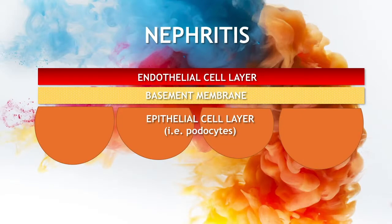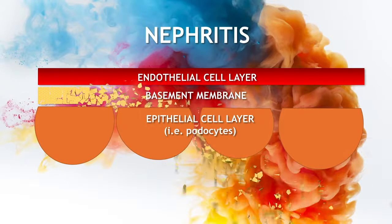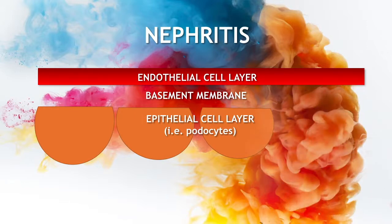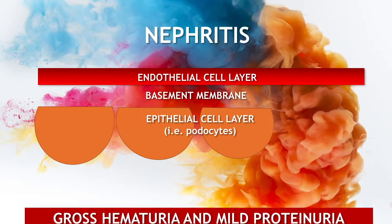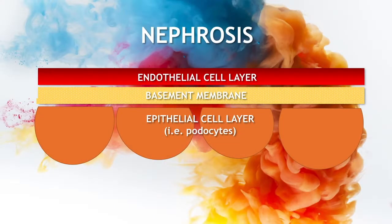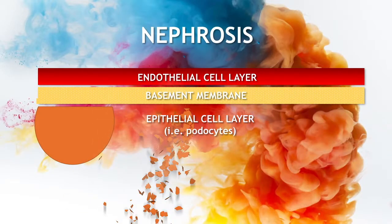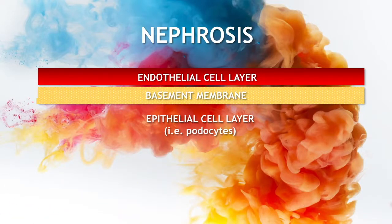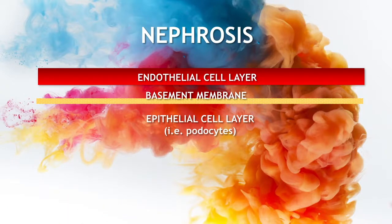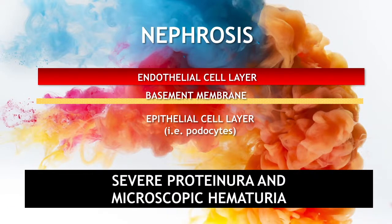With nephritis, it is usually the glomerular basement membrane that is involved with minor injury of the epithelial or podocyte layer, such that these patients usually present with gross hematuria and mild proteinuria. While in nephrotic syndrome, it usually involves the epithelial or podocyte layer, such that they present with overt heavy proteinuria, but it also involves some of the glomerular basement membrane, such that they present with microscopic hematuria.